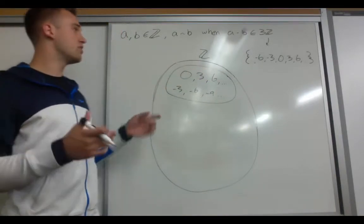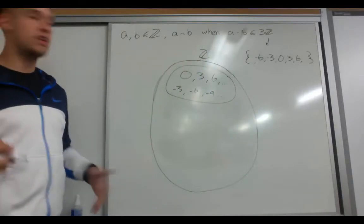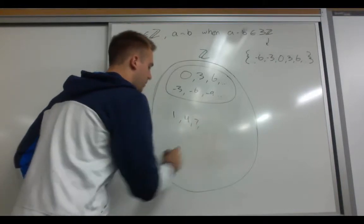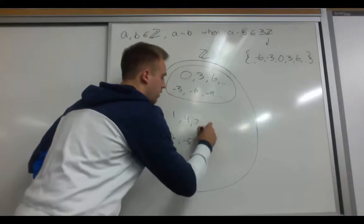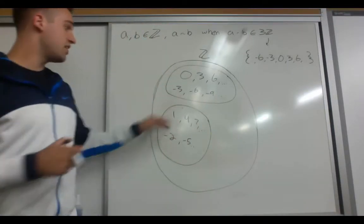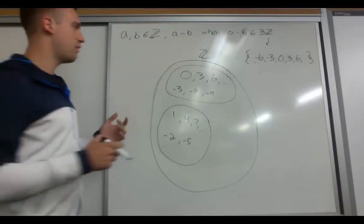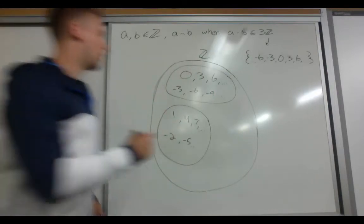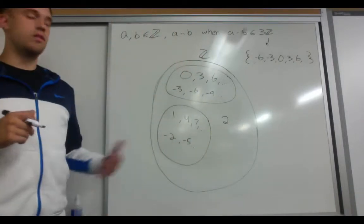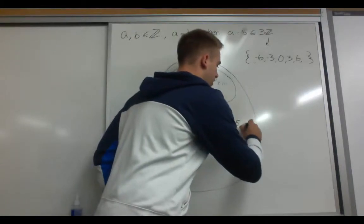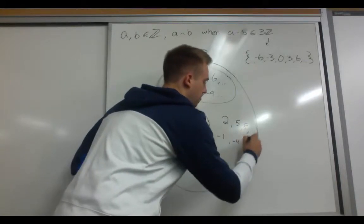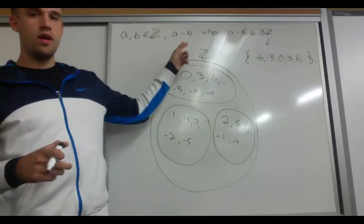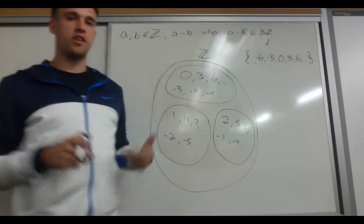However, this equivalence class does not contain all integers. One it doesn't contain is 1. The equivalence class containing 1 also includes integers such as 4, 7, negative 2, negative 5, and so on. If we take any two of these integers for A and B, A minus B still lands in 3Z. We're still missing some integers — specifically 2. The equivalence class containing 2 also includes integers such as 5, 8, negative 1, negative 4, and so on. Again, picking any two of these integers, A minus B ends up in 3Z.